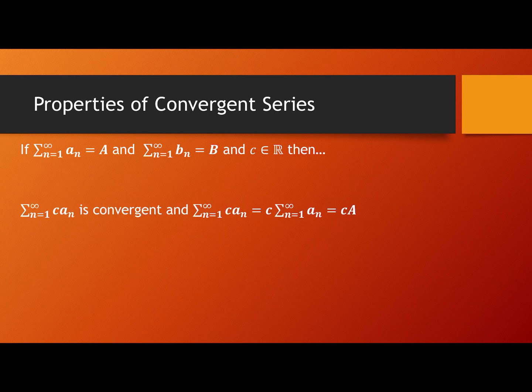Then sigma n=1 to infinity of c·aₙ is convergent. Here aₙ is the general term of sigma aₙ; we multiply every aₙ by c and sum them to get a new series. This series converges and its sum equals c times the summation of aₙ, which equals c·A.